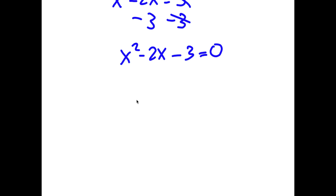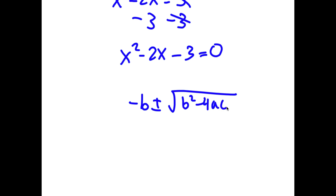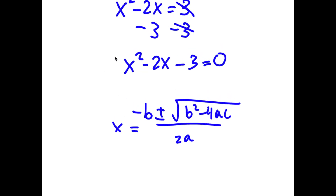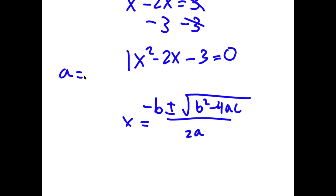Now I have x squared minus 2x minus 3 is equal to 0. To solve this, I'm going to use the quadratic formula, which is negative b plus or minus the square root of b squared minus 4ac, all over 2a. In this case, a is 1, b is negative 2, and c is negative 3.